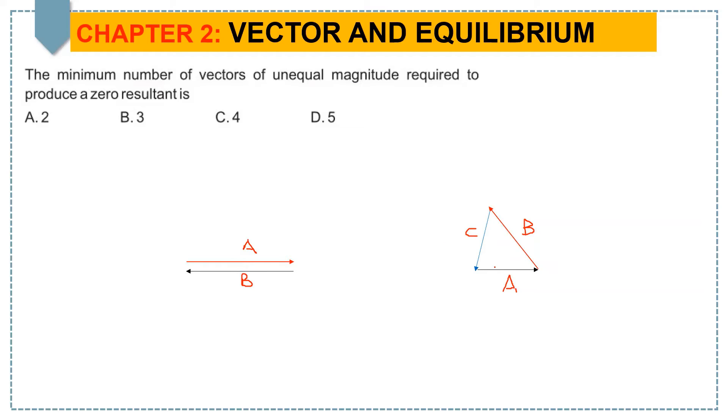Now what about three vectors? If we have three vectors of unequal magnitude and we add them by head-to-tail rule, as you can see here, here is vector A, then I draw vector B using head-to-tail rule, and then vector C using the same rule. As a result, we come up with zero resultant because the starting and end points are the same.